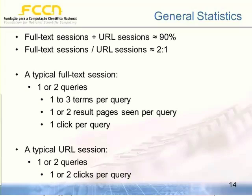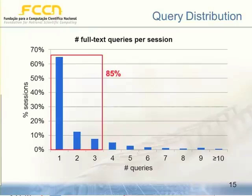The third thing we discovered was that users tend to submit very short sessions — one or two queries, with each query composed of one, two, or three terms. They tend to view just one or two results pages and then click on one result. In URL sessions, users submit even less information: one or two queries where each query was composed by one or two clicks. Here is a graph showing that users submitted mostly one query per session, around 66%, and 85% of sessions had up to three queries.